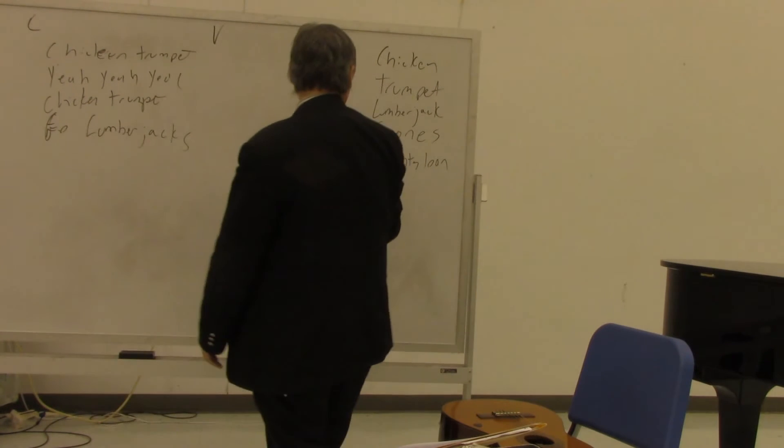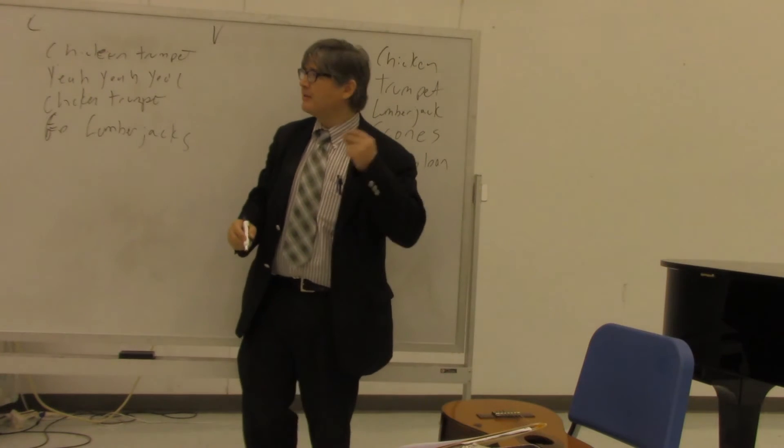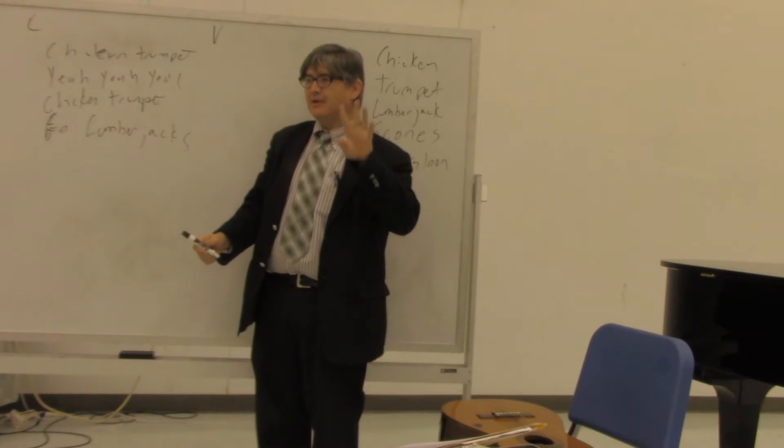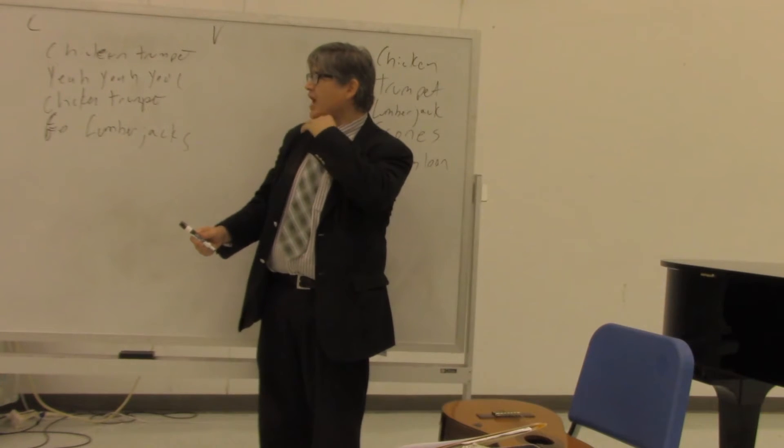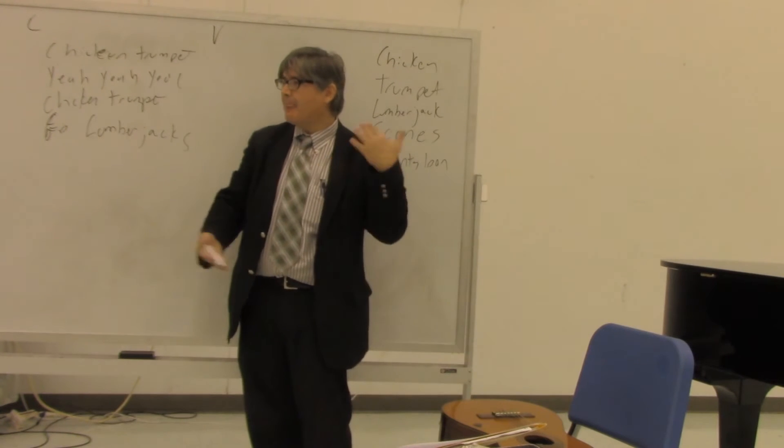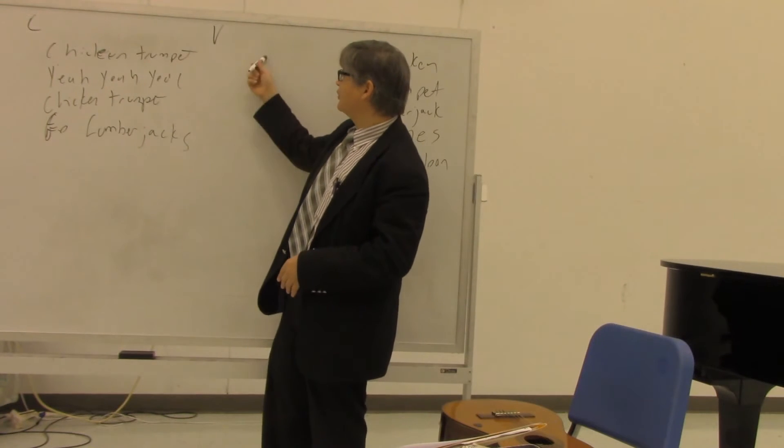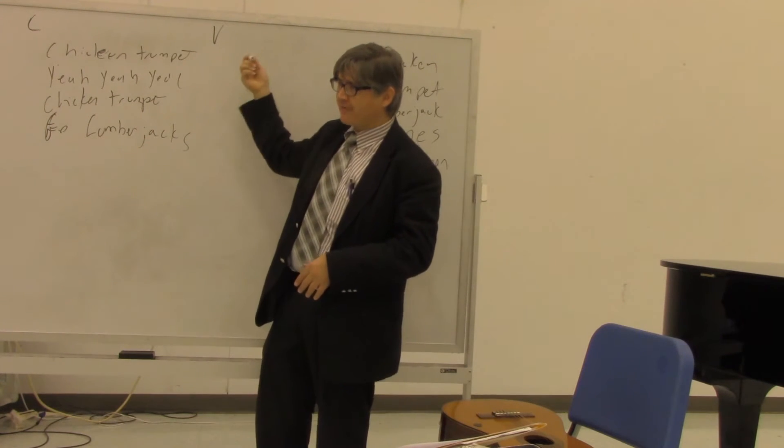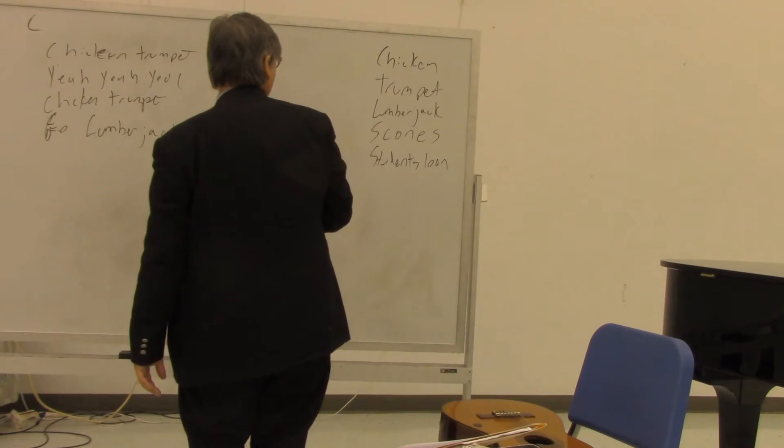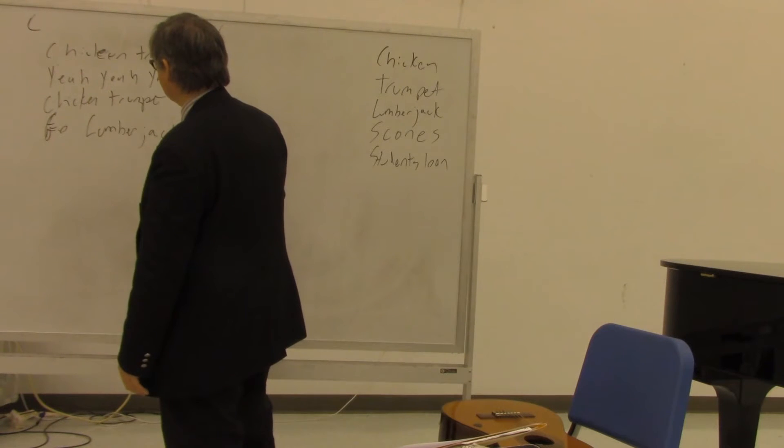Let me come up with a verse. So I've got scones, student loans. And I try to keep the meter. Like, if you think of this: chicken, trumpet. Chicken, trumpet. Yeah, yeah, yeah. Chicken, trumpet. Lumberjack. I want to have the syllables be kind of matching what I'm writing. So I don't want to have seven syllables and then do two syllables. I want them to kind of all be three or four or five or six syllables going on here. So let's see. Scones and student loans. Chicken, trumpet.